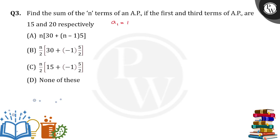So here the first term, a1 is given as 15 and the third term, a3, that is a plus 2d, is 20.